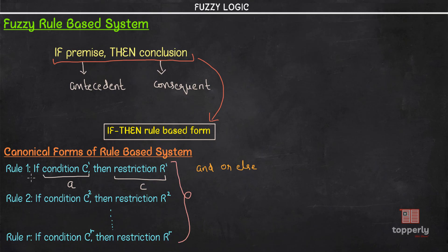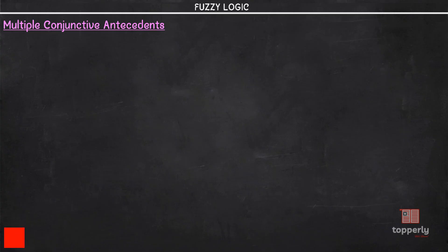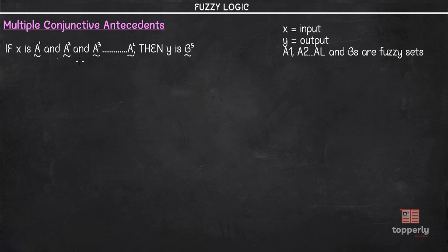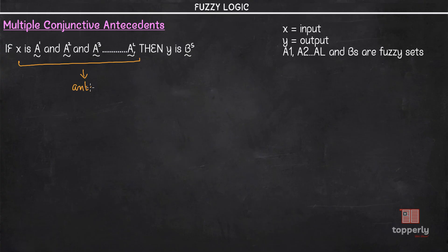In multiple conjunctive antecedents, we have: if x is A1 AND A2 AND A3 up to Al, then y is Bs. Here x is the input and y is the output, and A1, A2, A3 up to Al and Bs are all fuzzy sets or fuzzy numbers. One important thing to note is that this entire condition is your antecedent — all of these are joined by the conjunctive operator, or the AND operator. We know that the conjunctive operator, AND operator, and the intersection operator all perform the same function. Therefore this entire thing comprises your antecedent, and that is why it is called a multiple conjunctive antecedent.